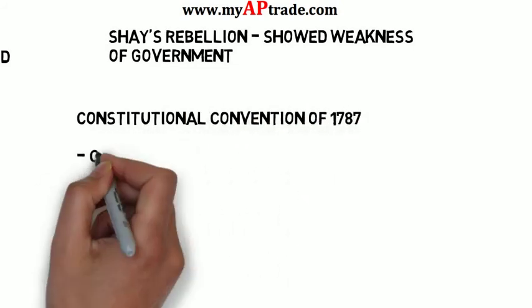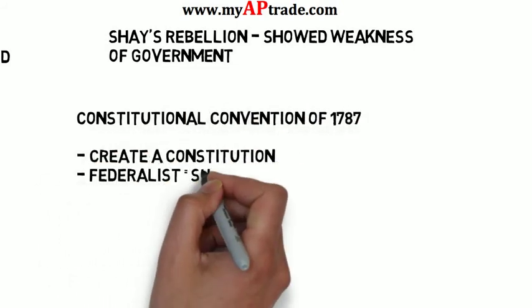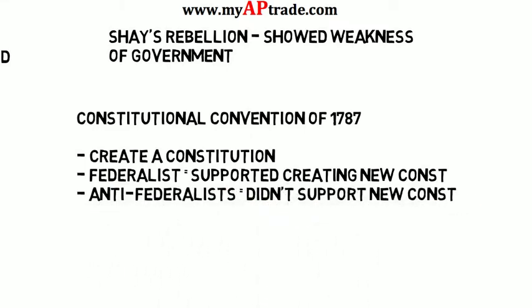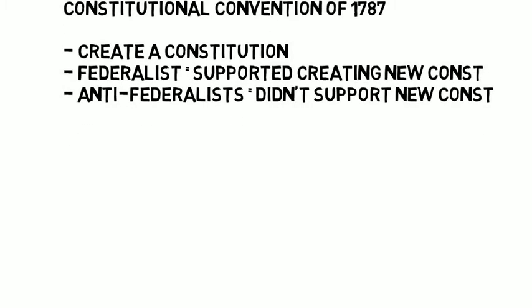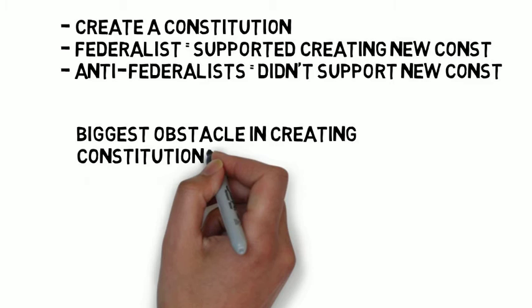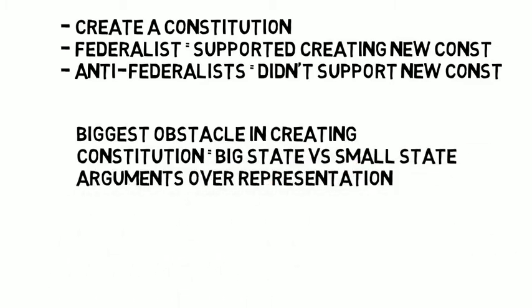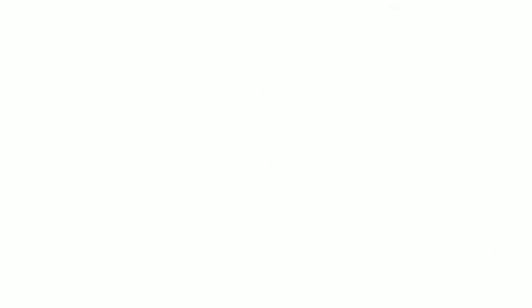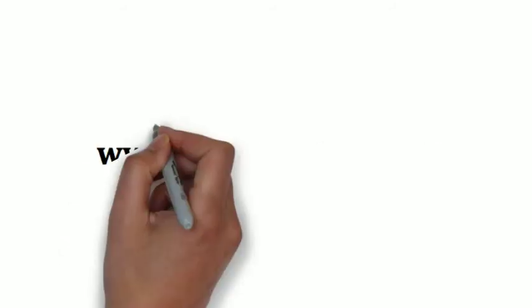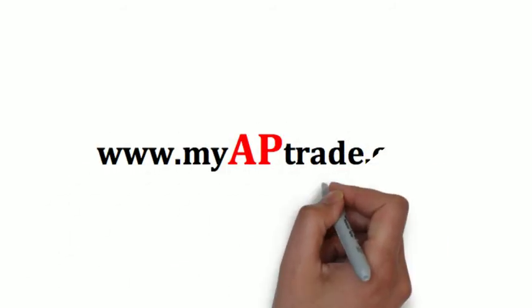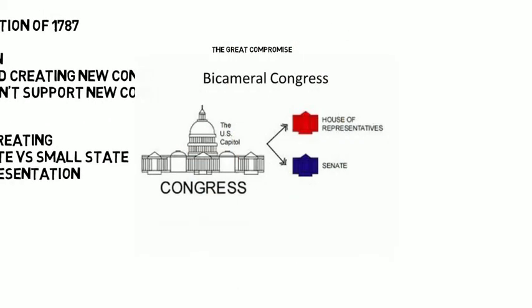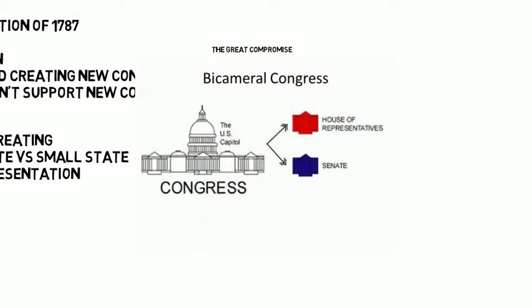The Constitutional Convention took place in 1787 with the objective of creating a constitution. The Federalists supported the constitution while the Anti-Federalists did not. The biggest obstacle in ratifying the constitution was between large states who wanted representation based on population and small states who wanted equal representation. The Great Compromise created a bicameral solution, effectively creating a House of Representatives based on population and a Senate with equal representation.